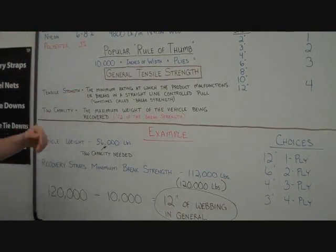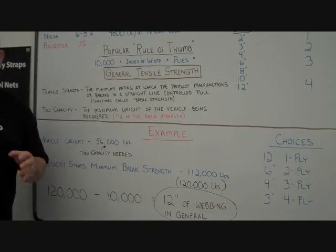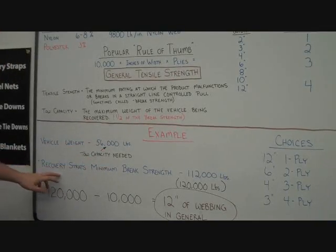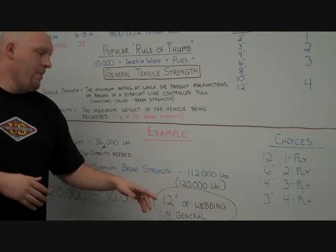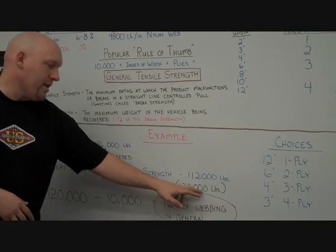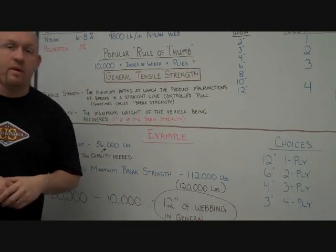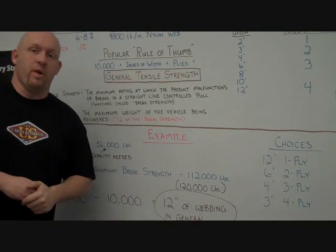Now as we referenced earlier, the toe capacity would be half of the brake strength. We want to double this to find out what the brake strength of the recovery strap we need. So by doubling that, the recovery strap's minimum brake strength should be 112,000 pounds. But for calculation purposes, let's easily round this up to 120,000 pounds. This way it's easier to work the math with 10,000 pound figures.